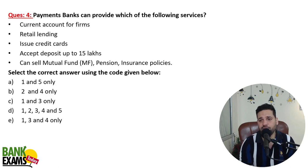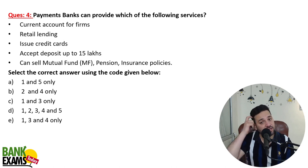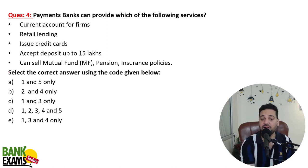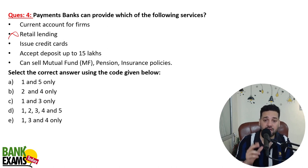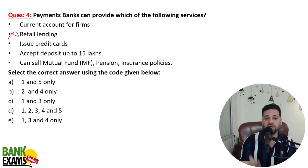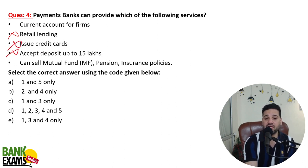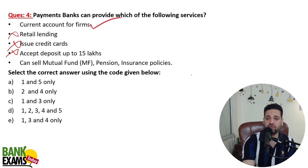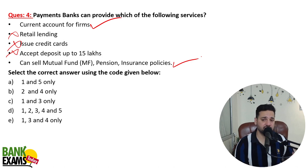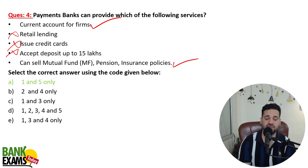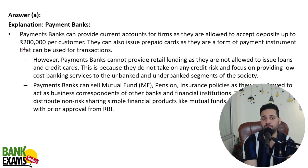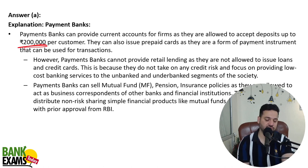Can payment banks open current accounts of firms? Yes, they can do that. However, they cannot do retail lending — they cannot provide loans or credit cards to the general public. Payment banks can accept deposits of up to 2 lakh rupees per customer, not 15 lakhs. They can sell mutual fund policies, pension and insurance products. That is why payment banks are not very popular at the moment.